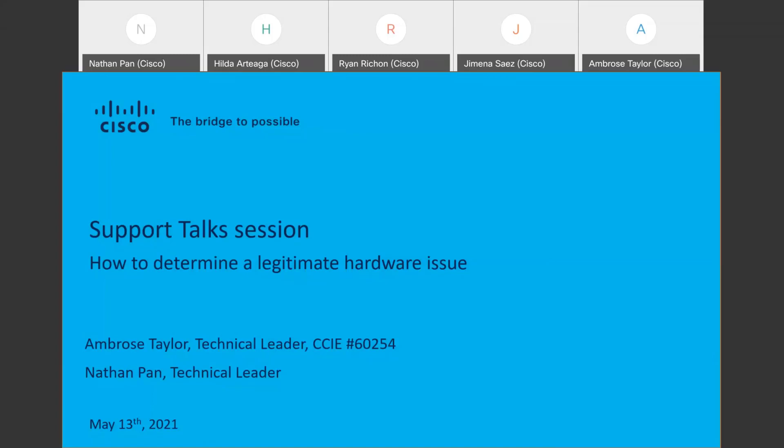Hello everybody, and welcome to this Support Talk session. My name is Hilda Ortega, and I am a community manager of the Cisco community and the host of today's event. Today's topic is really interesting because we are going to answer the question of whether you really need an RMA or not — that is, how to determine a legitimate hardware issue. The Cisco community is an online forum with over close to a million members, where you can get answers to your technical questions prior to opening cases with TAC.